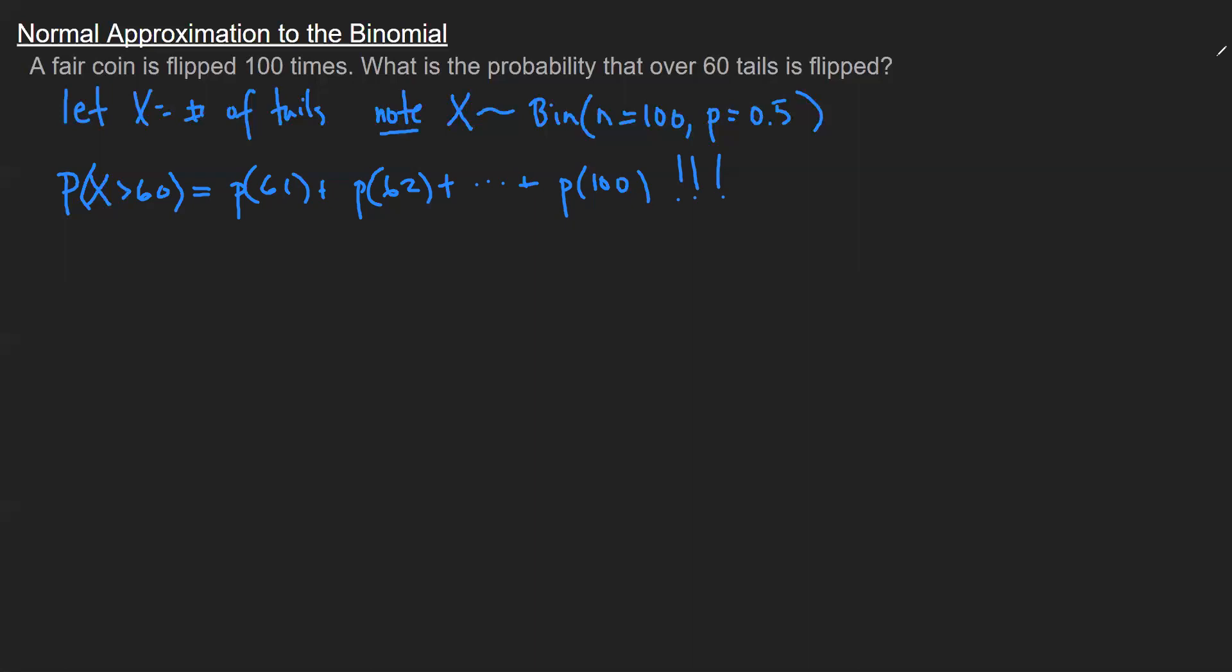Sometimes a trick we could use is to look at the complement of the event to see if that saves us any time. But in this particular case, the complement is going to be even longer. It would be all the outcomes from 0 all the way to 60.